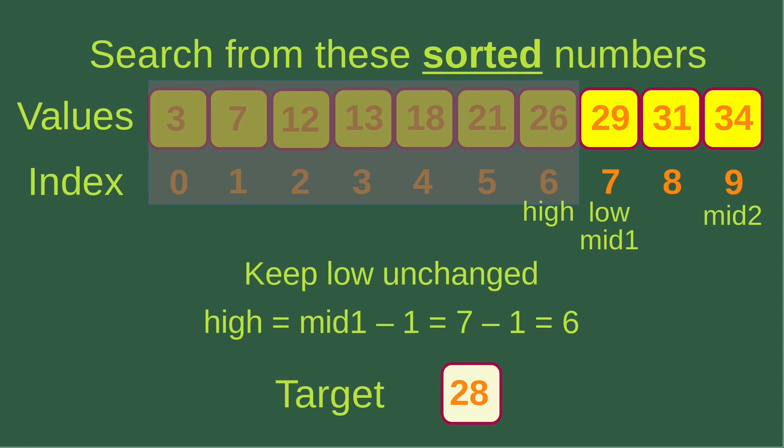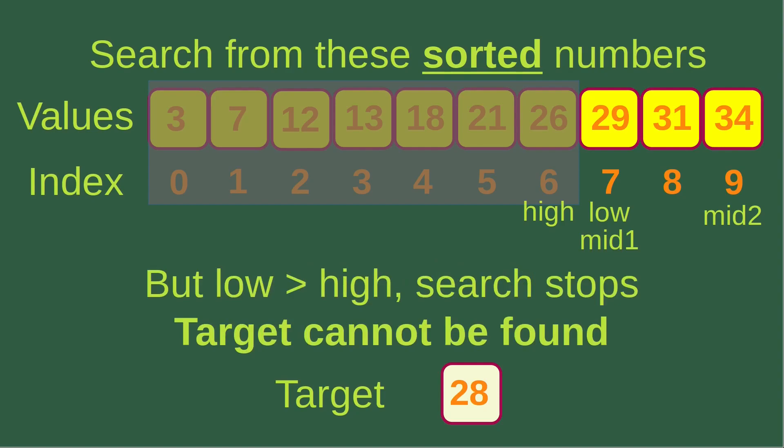Now you can see that the high index is already outside the right-hand part we focused on. The low index is now larger than the high index, which indicates that the target cannot be found. So we stop the search, and that is the end of the entire search process.